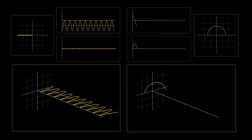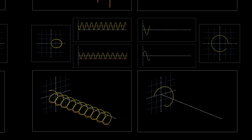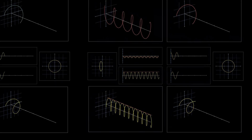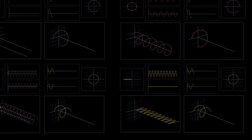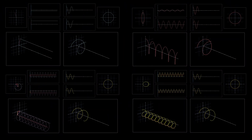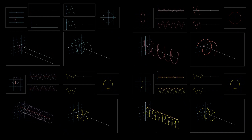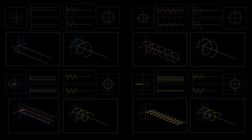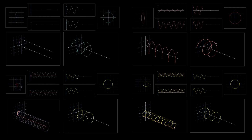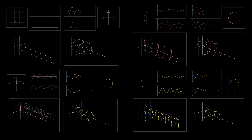Power is the most important quantity in any electrical system. Electrical power is the rate at which energy is being consumed or supplied. The power absorbed or supplied by a circuit element is the product of the voltage across the element and the current flowing through it.